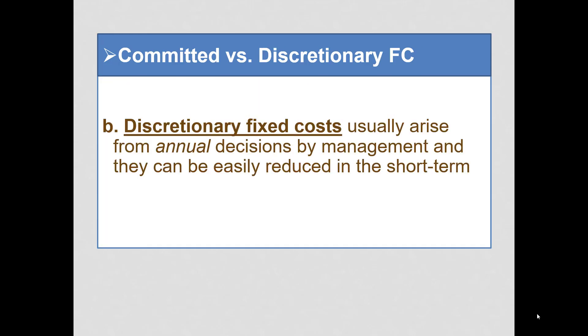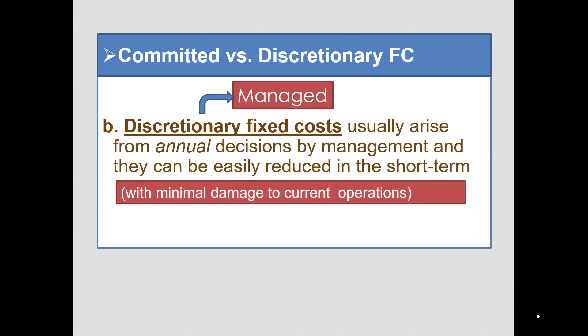Now, discretionary fixed costs usually arise from annual decisions. They can be modified before you sign a contract. So in planning, these are called managed or discretionary fixed costs. And they include things that will not have immediate damage to current operations. The examples would be training programs. We could go from a one week training program to a three day training program. Advertising, research and development.